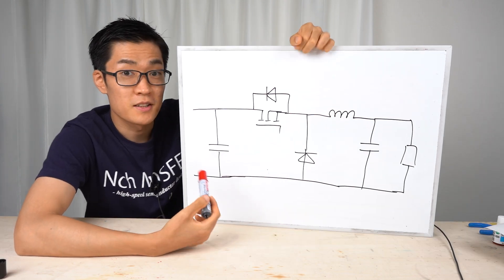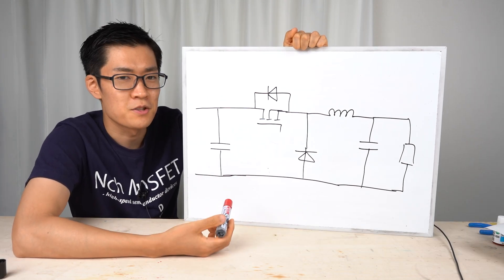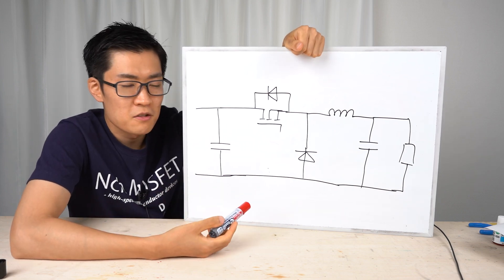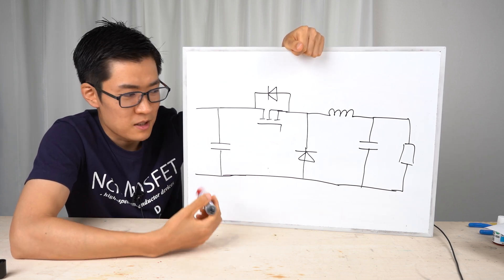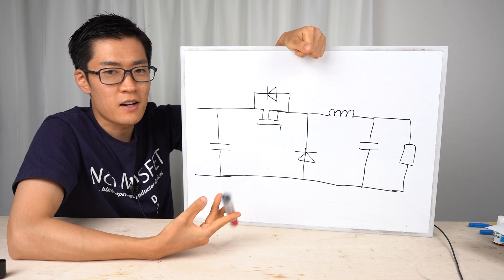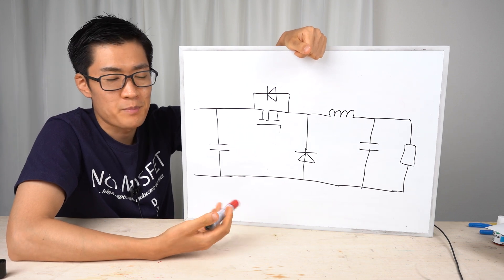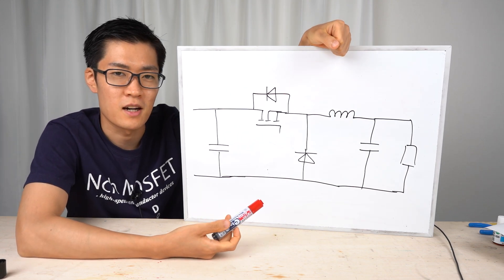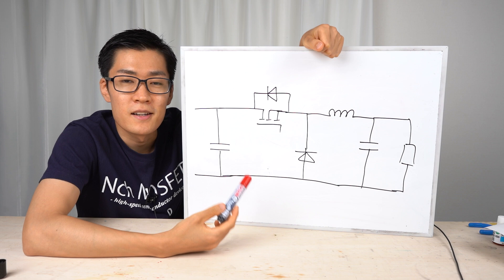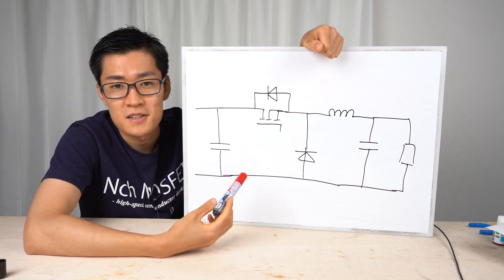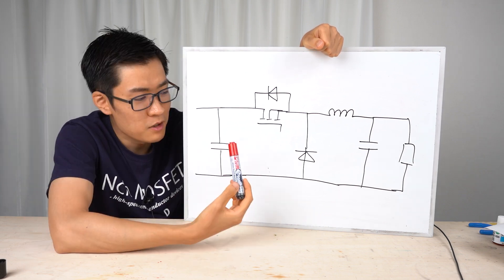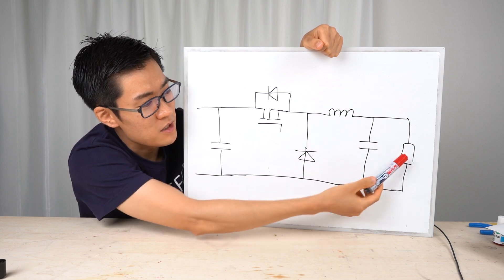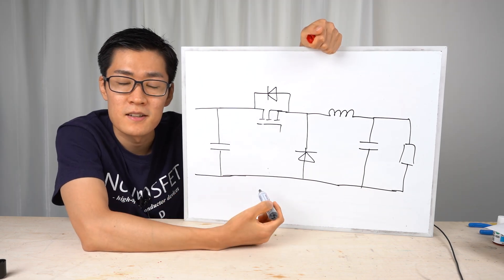Why are noises generated? It's very difficult to explain. Noises are generated for many reasons — so many that you can't always identify the cause, which is why noise suppression is difficult. I'll explain how noises are generated using this circuit. This is a capacitor, a diode, an inductor, another capacitor, a resistor, and this is a MOSFET — it's like a switch that can turn off the current.